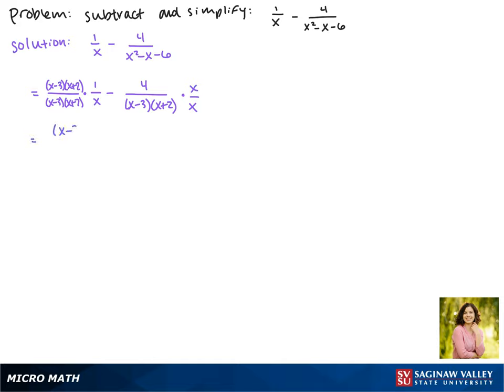What we get is x minus 3 times x plus 2 over x times x minus 3 times x plus 2. In the second term 4 times x gives us 4x and the denominator will be the same as the first term.